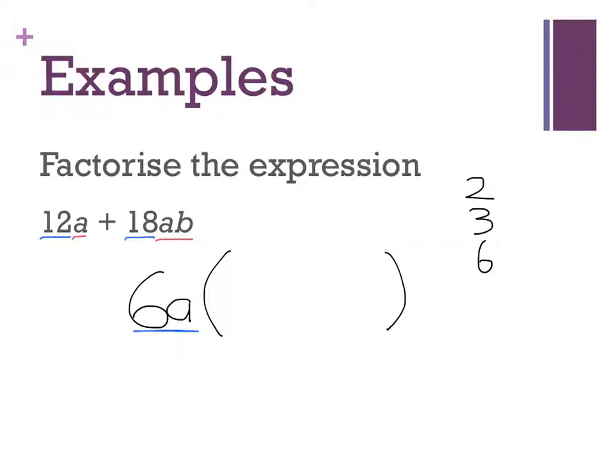Okay, so I go right, what do I have to times 6a by to get 12a? Okay, let's do my numbers first. Six times what is 12? Okay, six times two. Now I've already got the a so I don't have to put anything else. 6a times two is 12a. Okay, awesome.